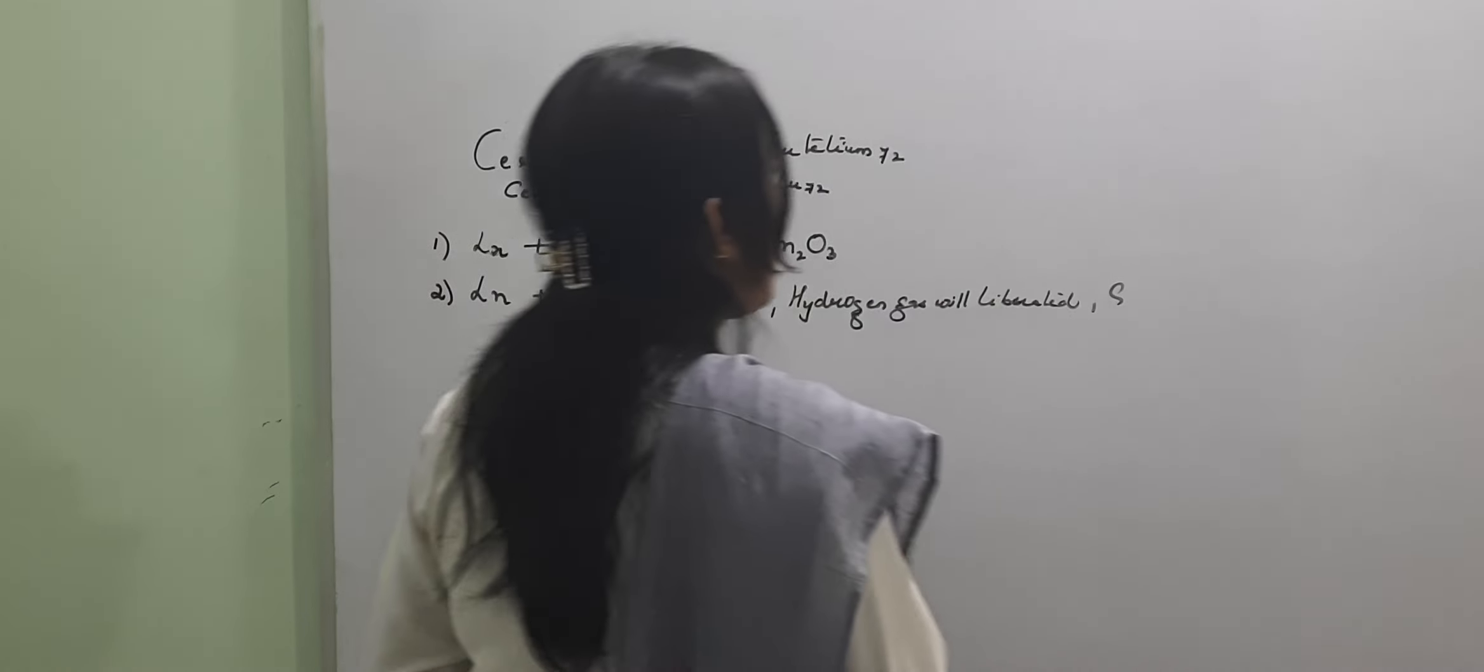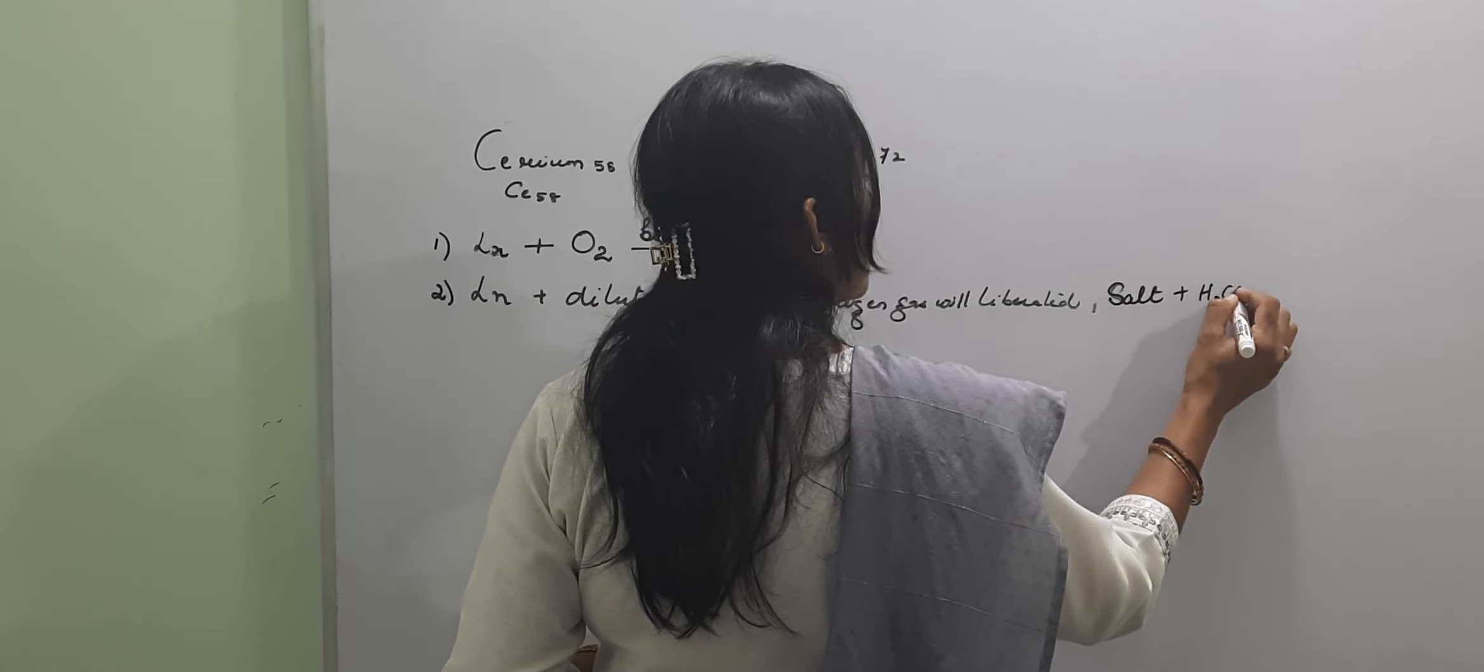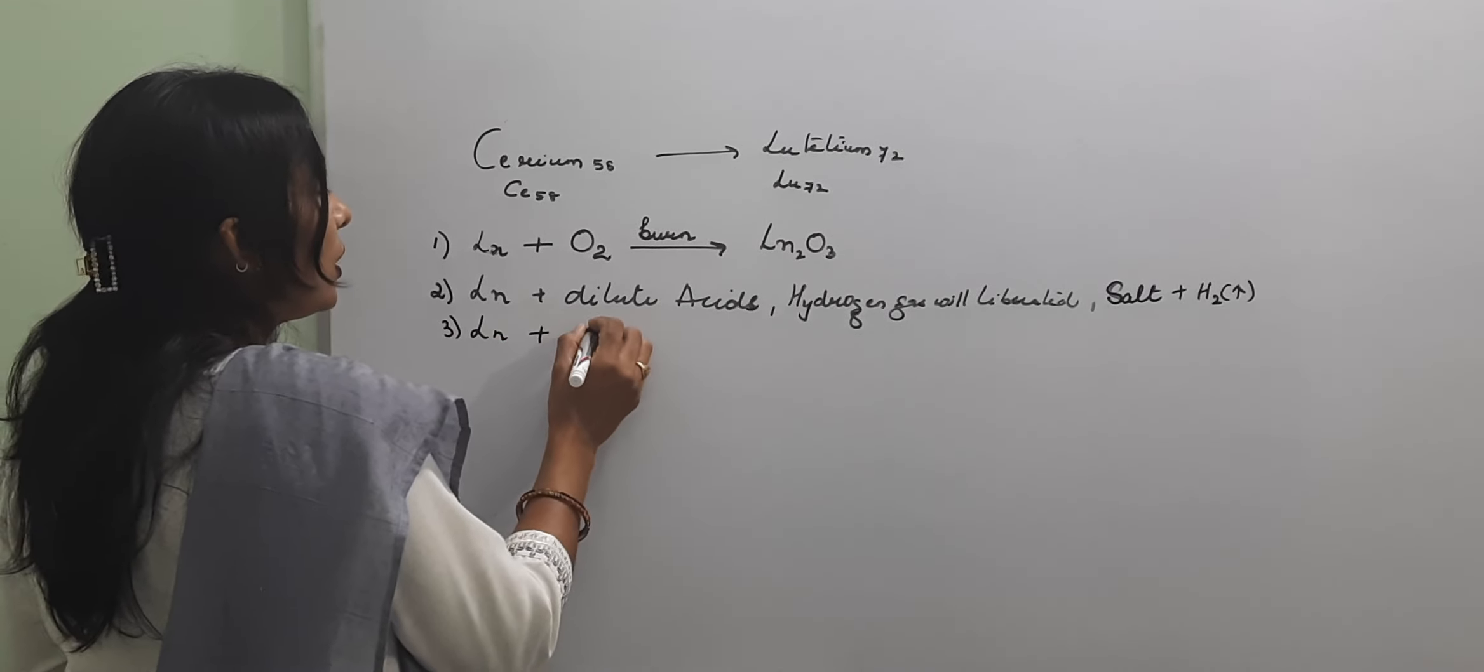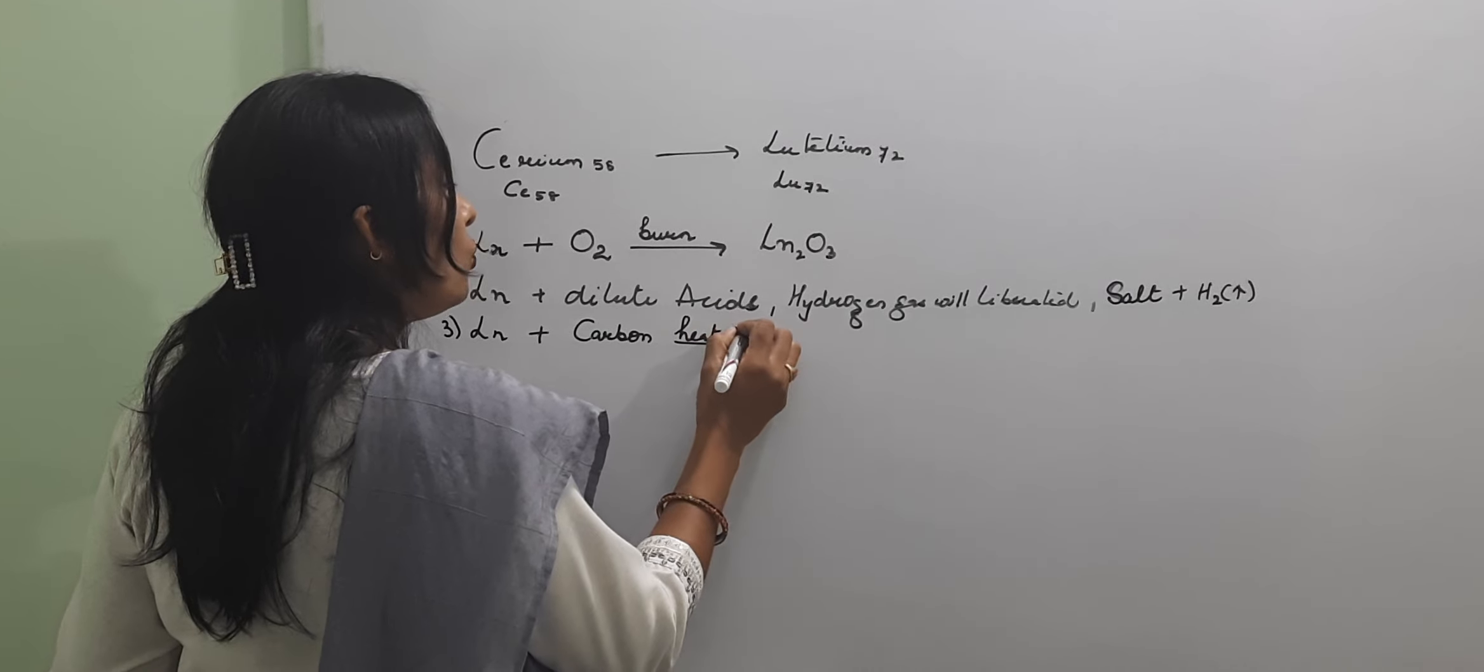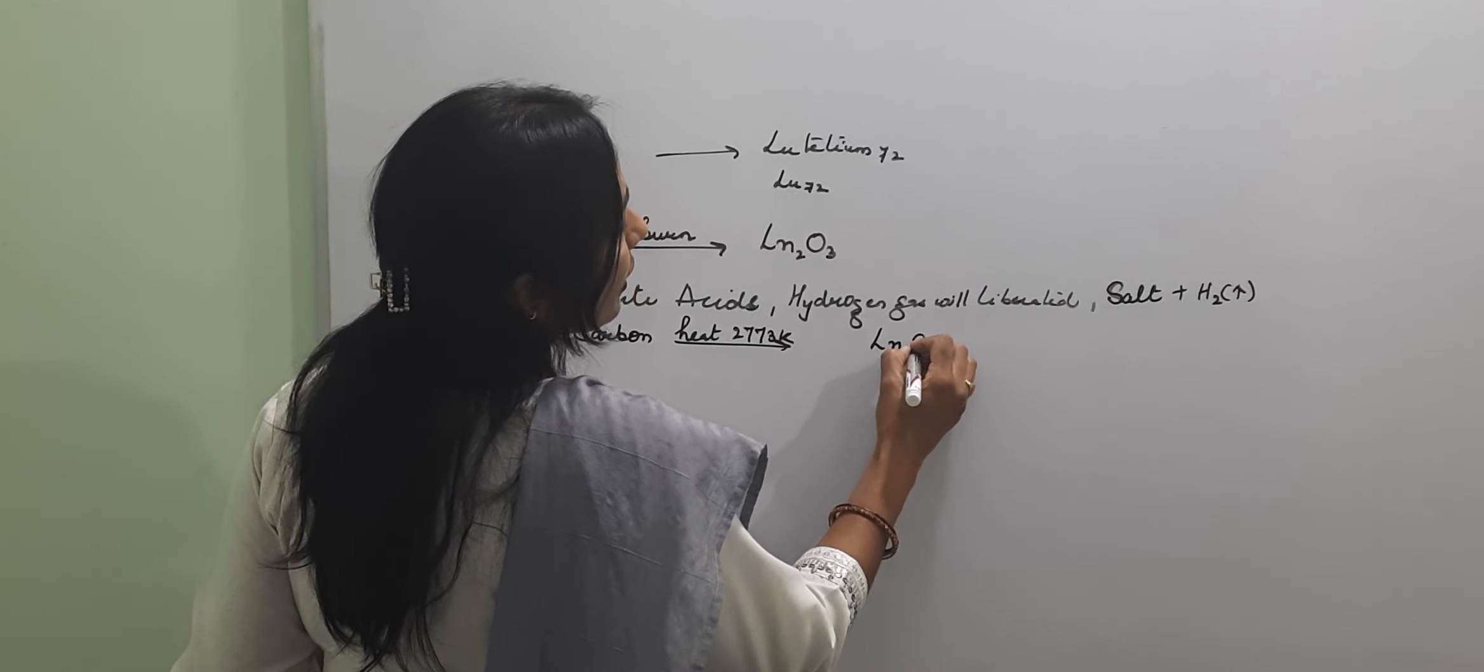When lanthanides are heated with carbon at 1773 Kelvin, we will get lanthanide carbide.